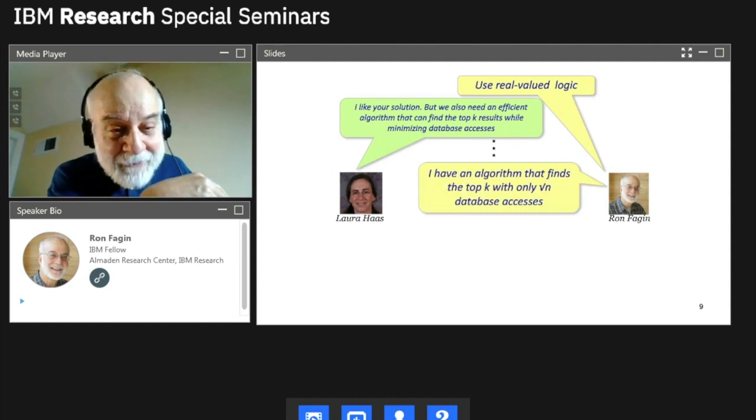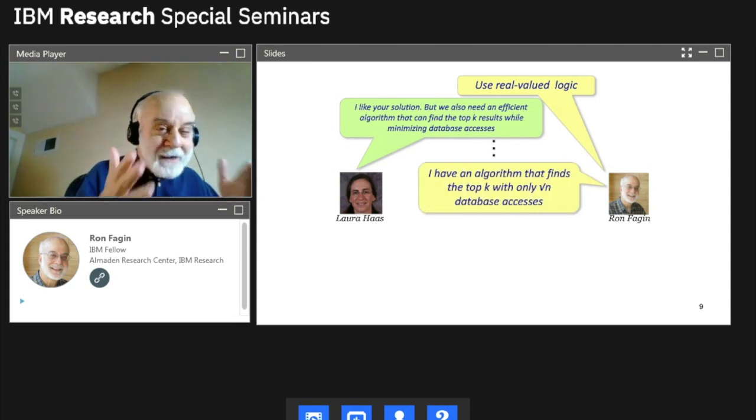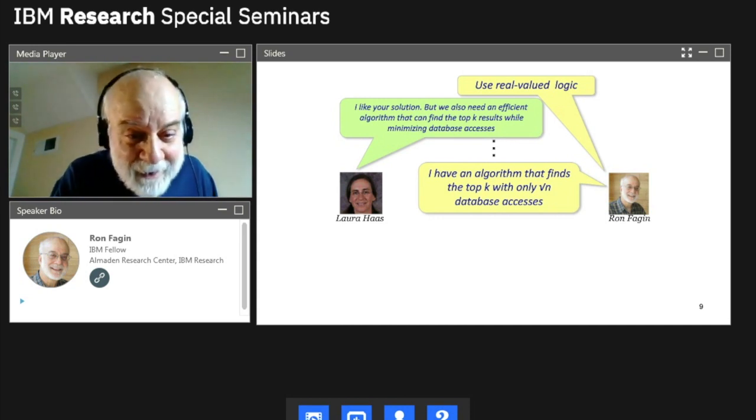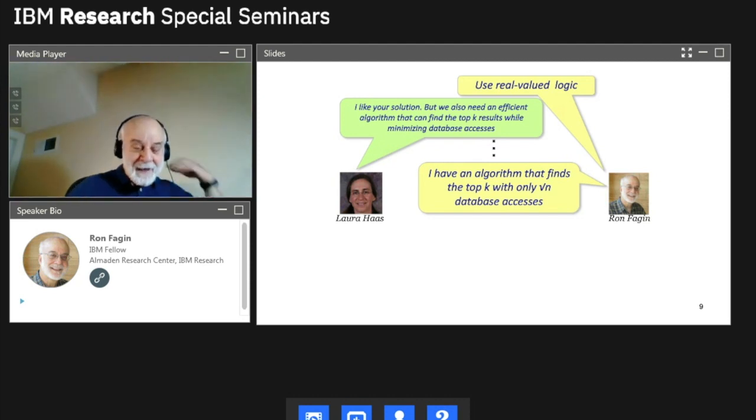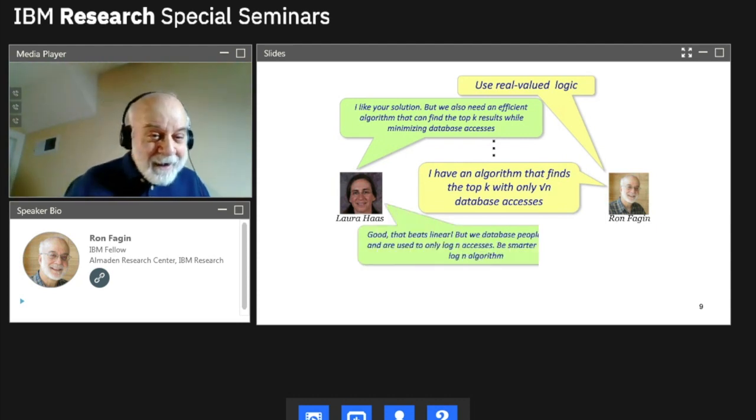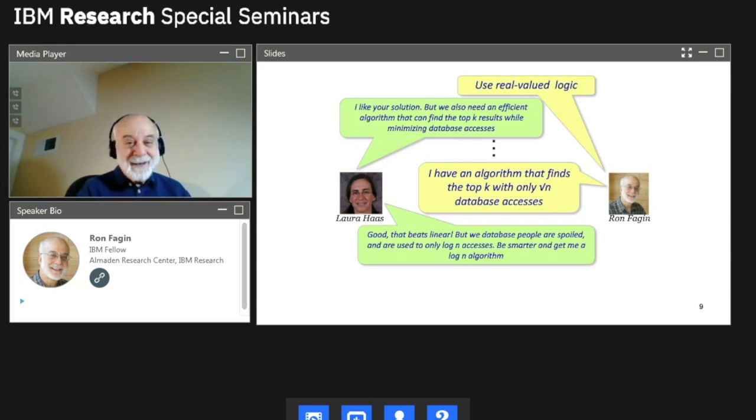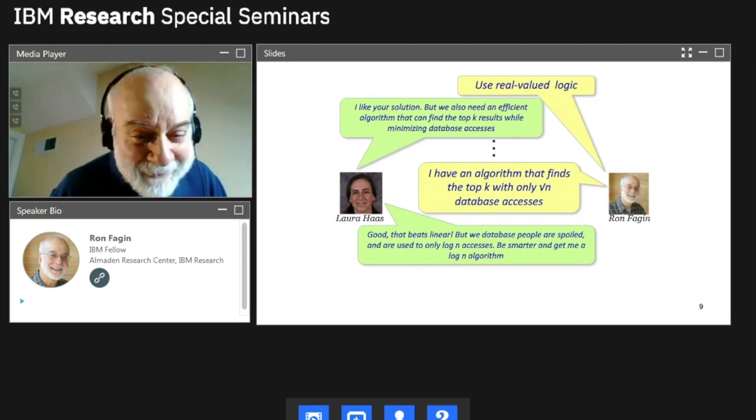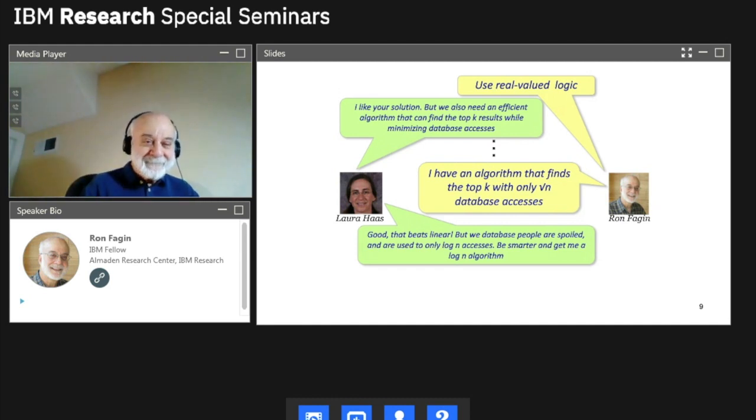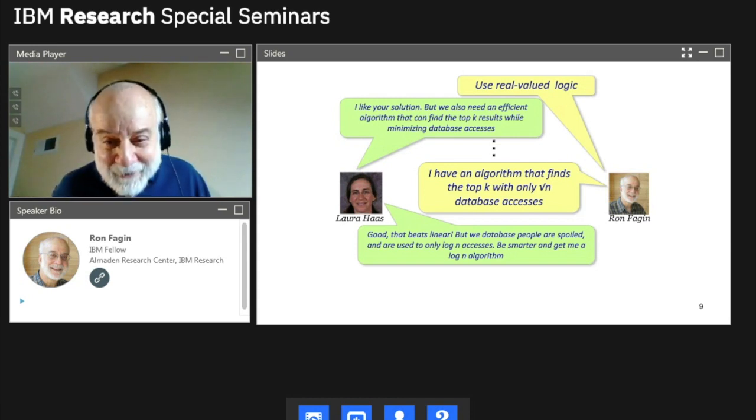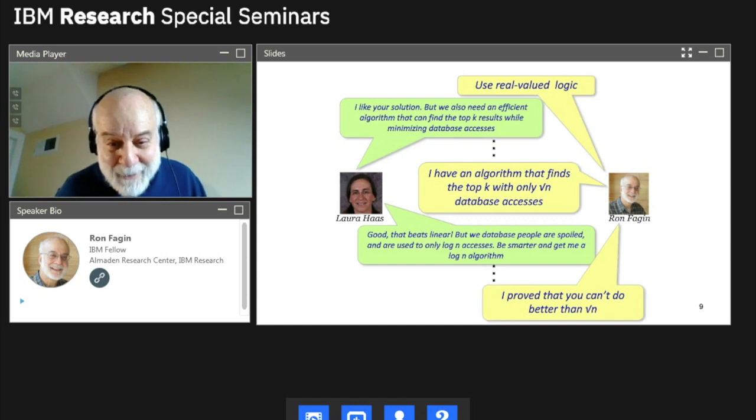So I thought, hmm. So I scratched my head, came back to her a couple of days later and said, Laura, good news. I've got an efficient algorithm. Instead of linear time where N is the number of items in the database, where you have to look at everything, it's square root of N. So you can use square root of N accesses and get the top K. So that's great. I was very happy. But Laura said, and I'll never forget her answer. She said, good. She said, certainly better than linear. She said, but you know, we database people are spoiled. We're used to log N things like B trees. So she said to me, and I really, I'll never forget it. Be smarter. Go get me a log N algorithm. So I thought, hmm. So I scratched my head, came back to her a couple of days later and said, guess what, Laura? I can prove you can't do any better than square root of N. That's it. No better algorithm. She said, fine. Okay, we'll take it. And they implemented it in GARLIC.